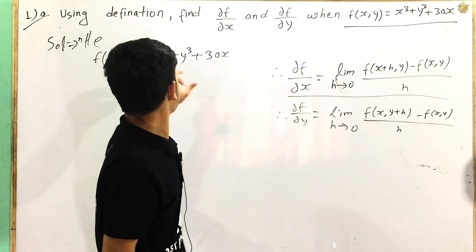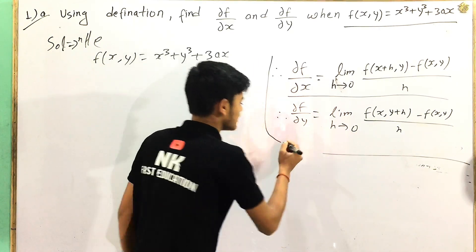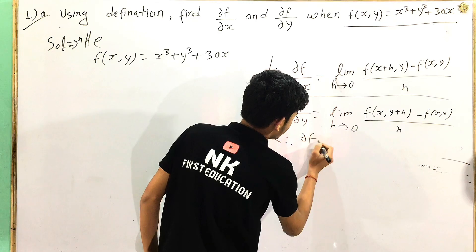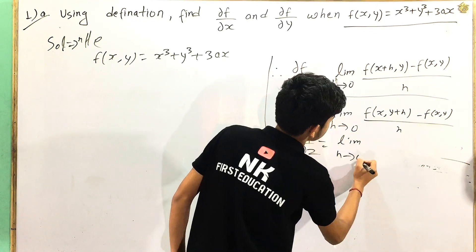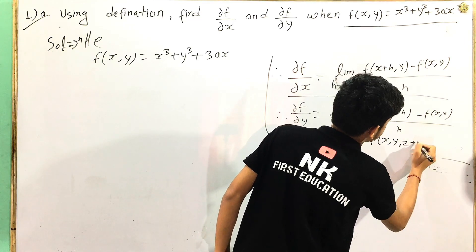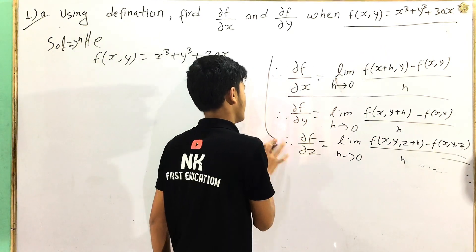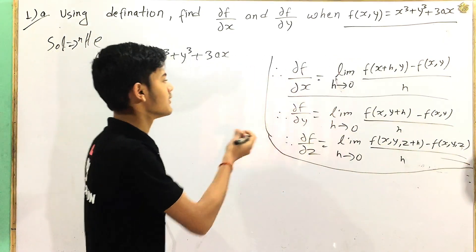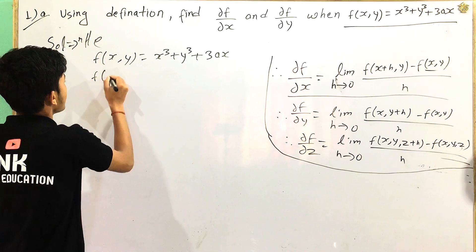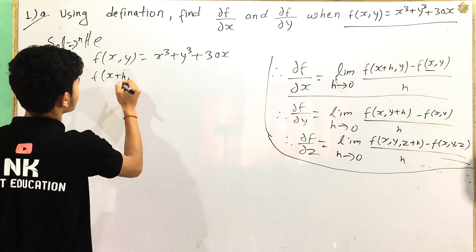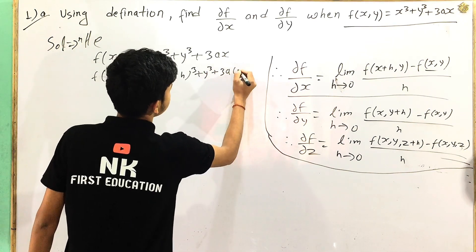We are trying to solve this problem. So here we have got the equation. This definition is what I must apply. We take the value here. Del f by del x is a function of x, y, z. This point has to be: limit h tends to 0 of [f(x+h, y) minus f(x, y)] divided by h, where f(x+h, y) = (x plus h) cube plus y cube plus 3a(x plus h).